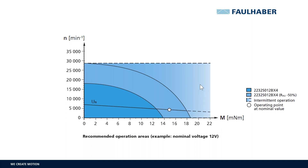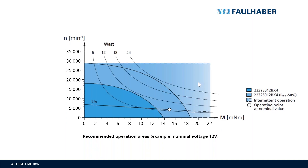Our Faulhaber Drive Calculator can help you to find the right motor for your working point and operation mode. We can also add the motor power to the diagram. The different lines show the motor output power at different operating points. We can see that the motor can reach 24 watts, but only in cooled condition with an intermittent operation cycle.